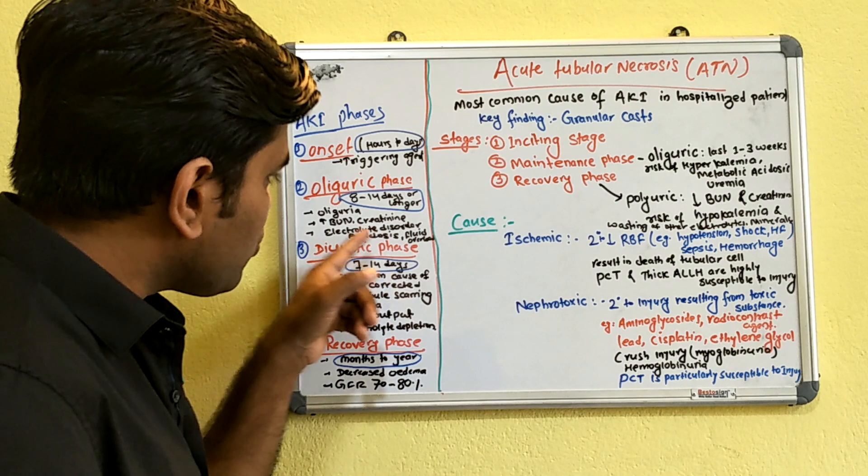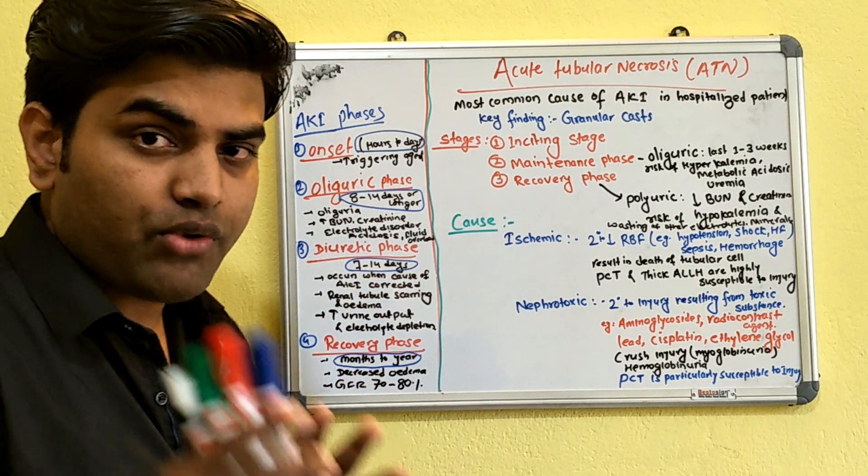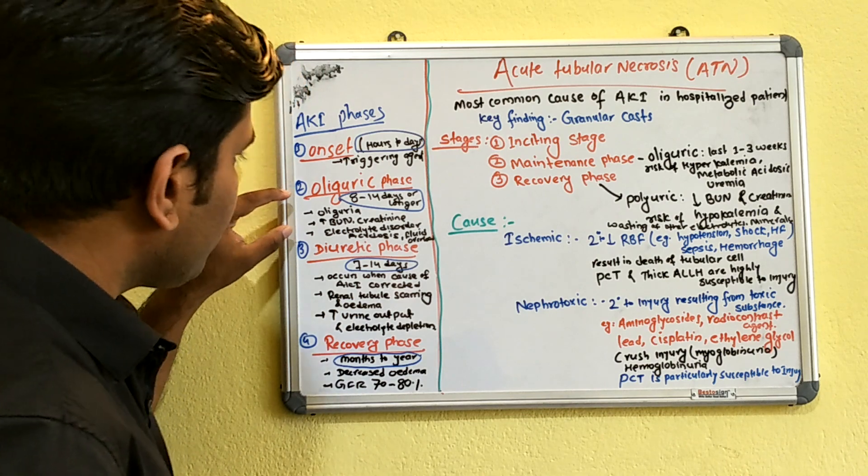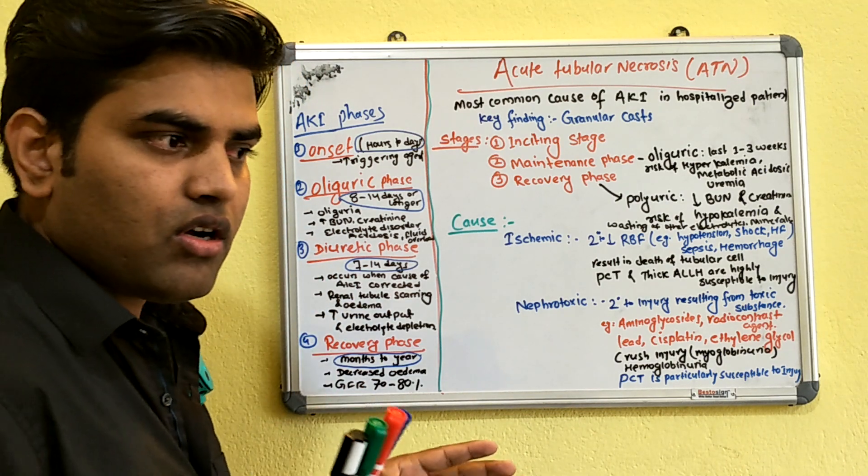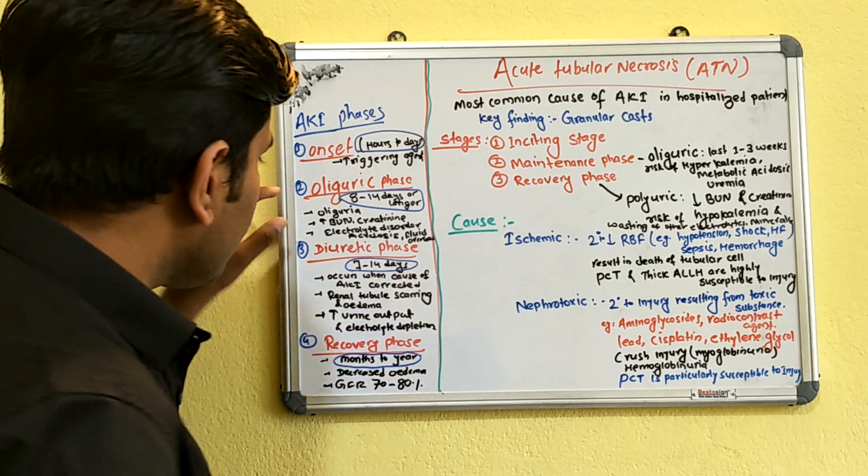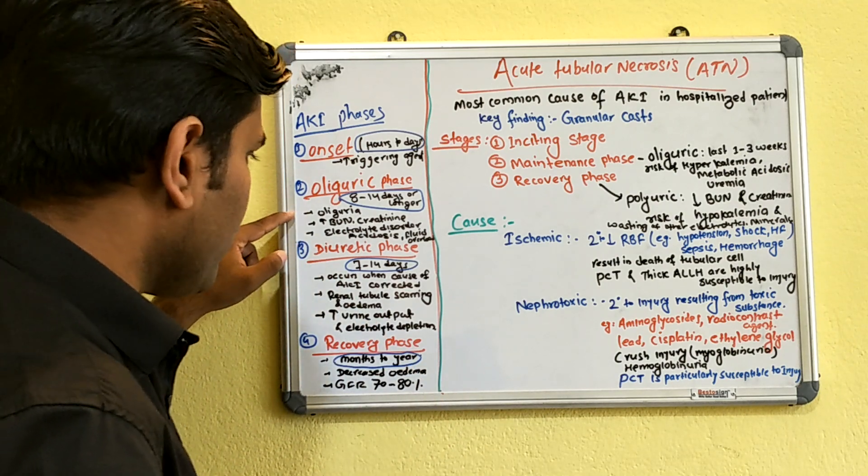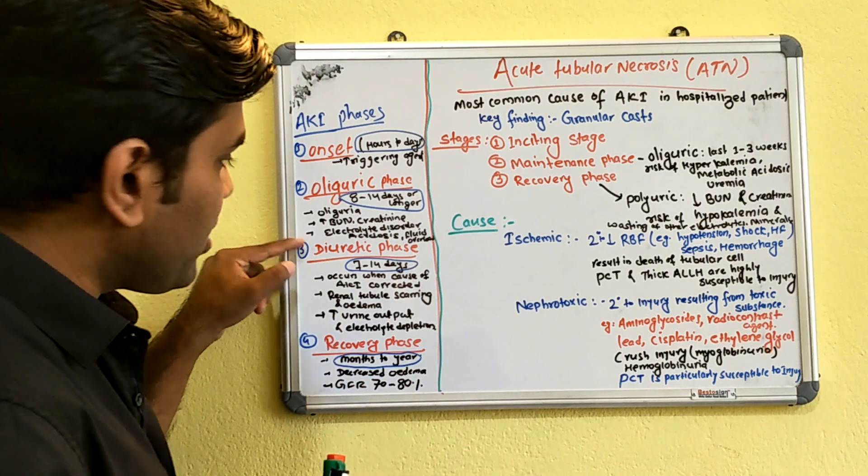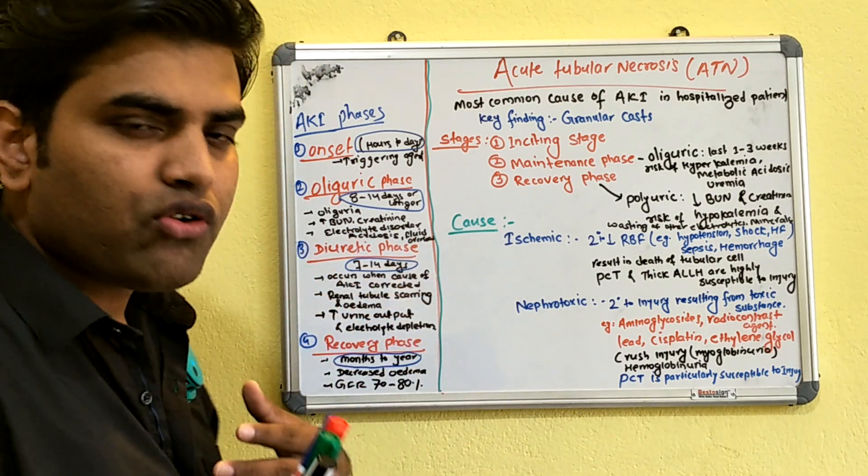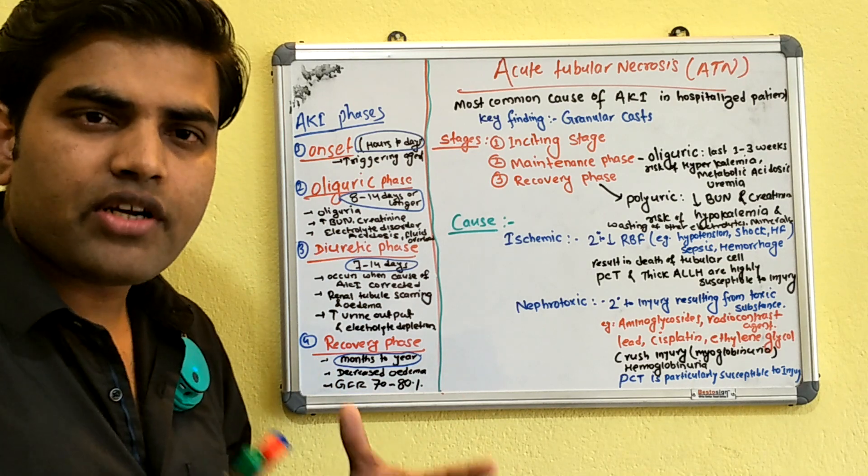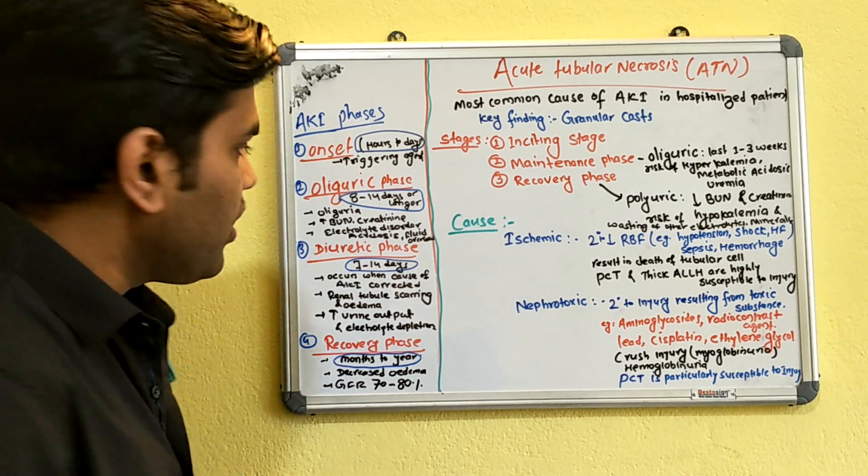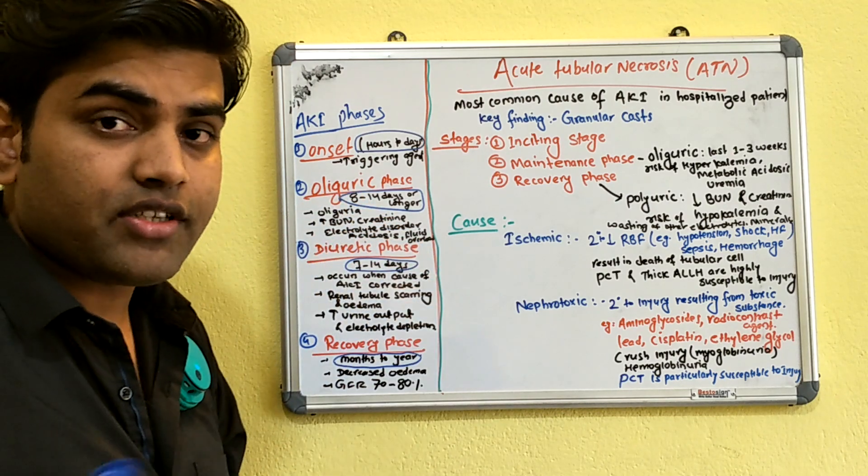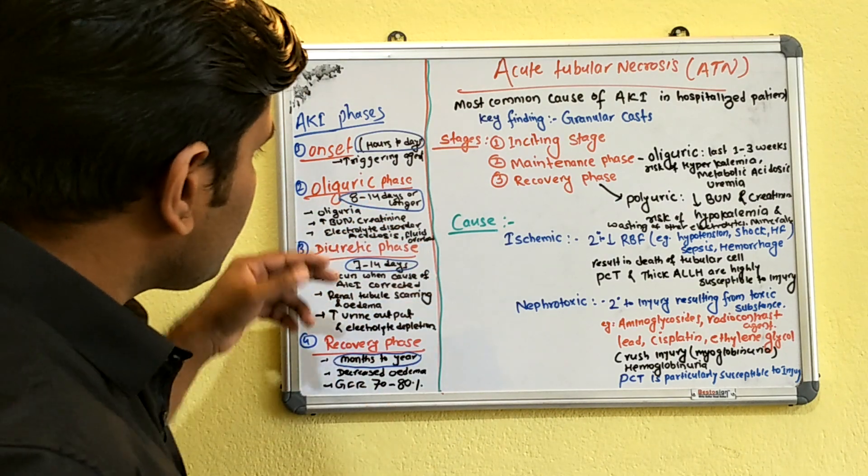Once damage occurs, they go into the oliguric phase, which lasts from eight to 14 days or even longer depending on the severity. This oliguric phase is the more critical phase where there will be oliguria, non-retention of nitrogen, electrolyte disturbances, acidosis, and fluid overload, which can lead to heart failure or other complications.